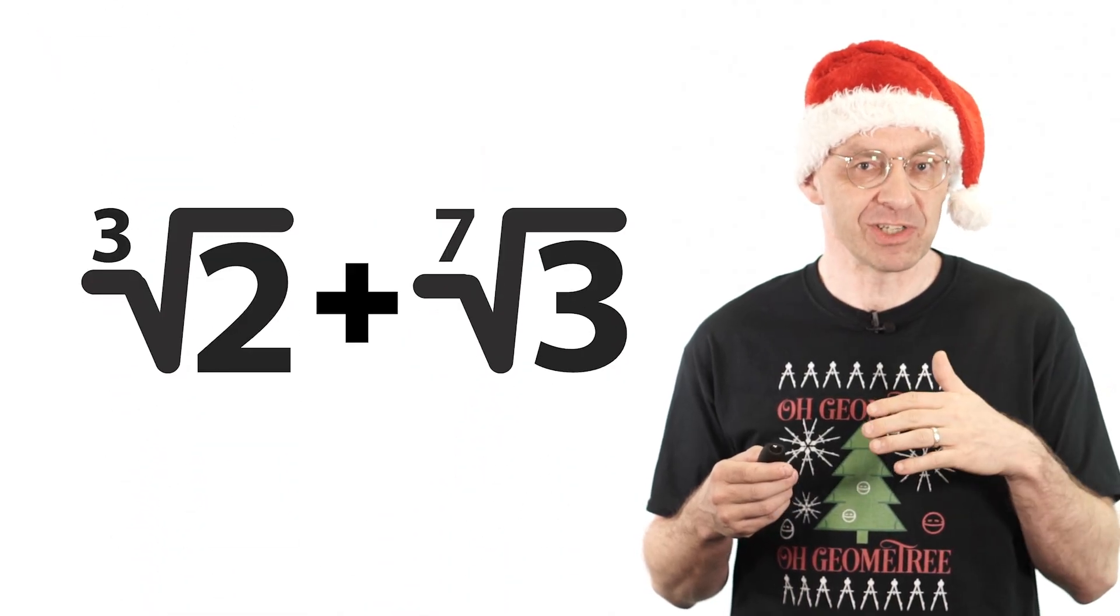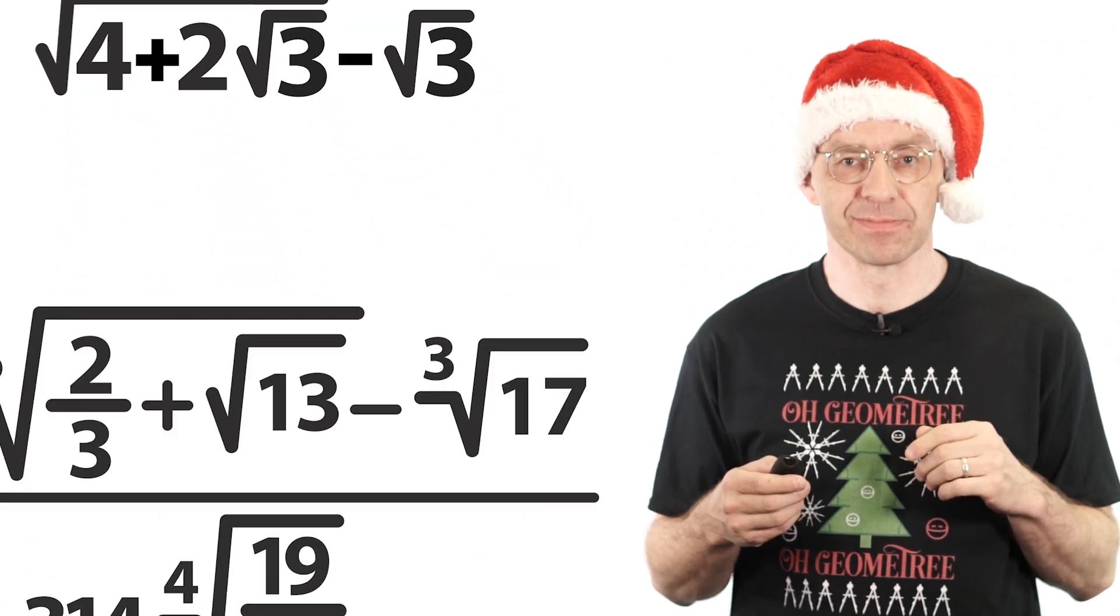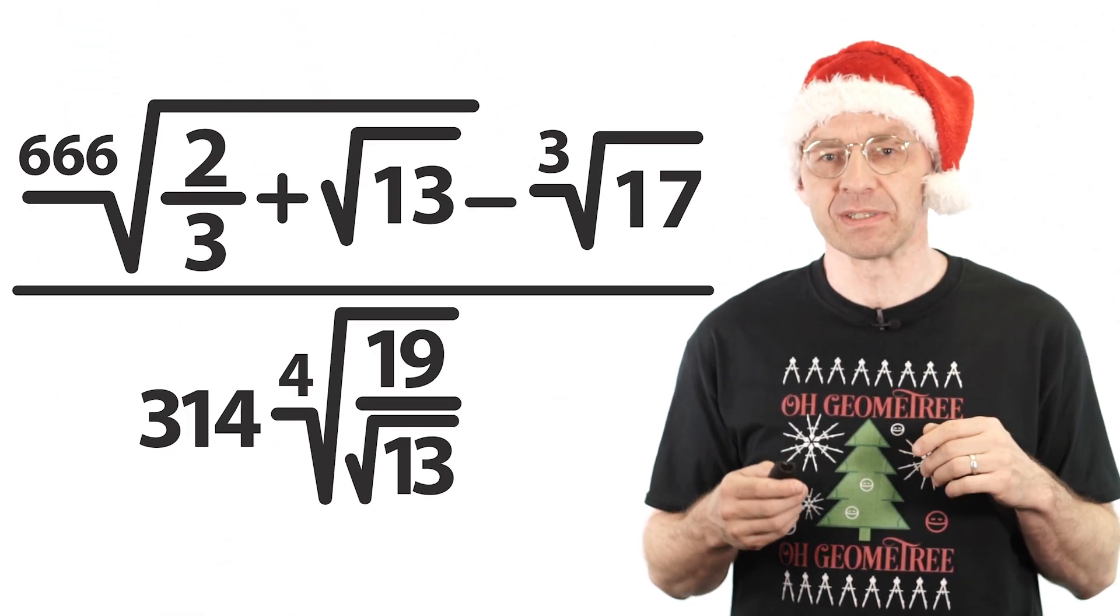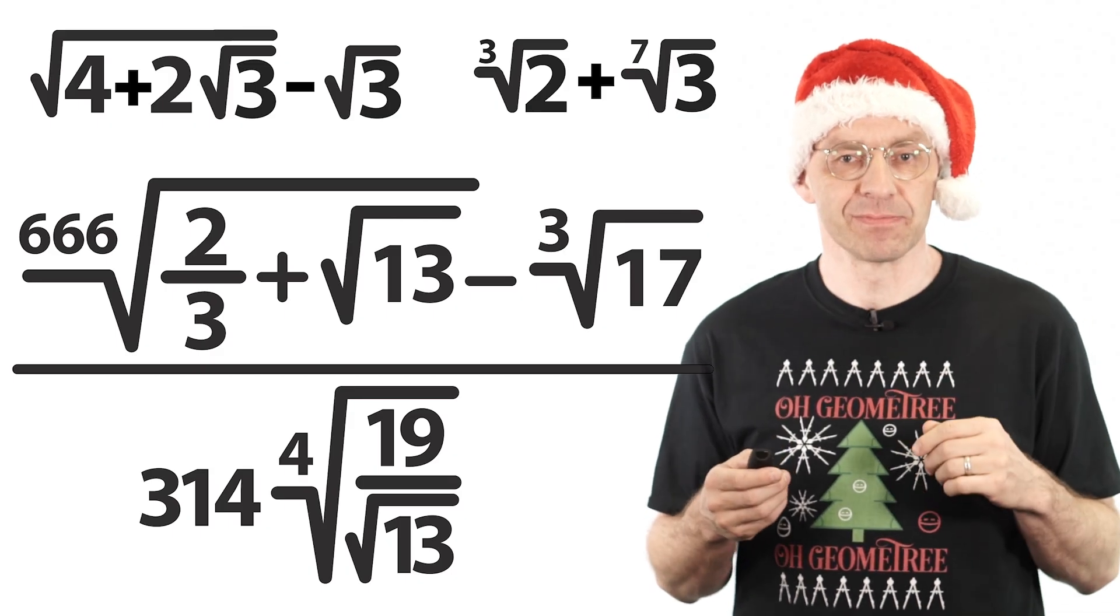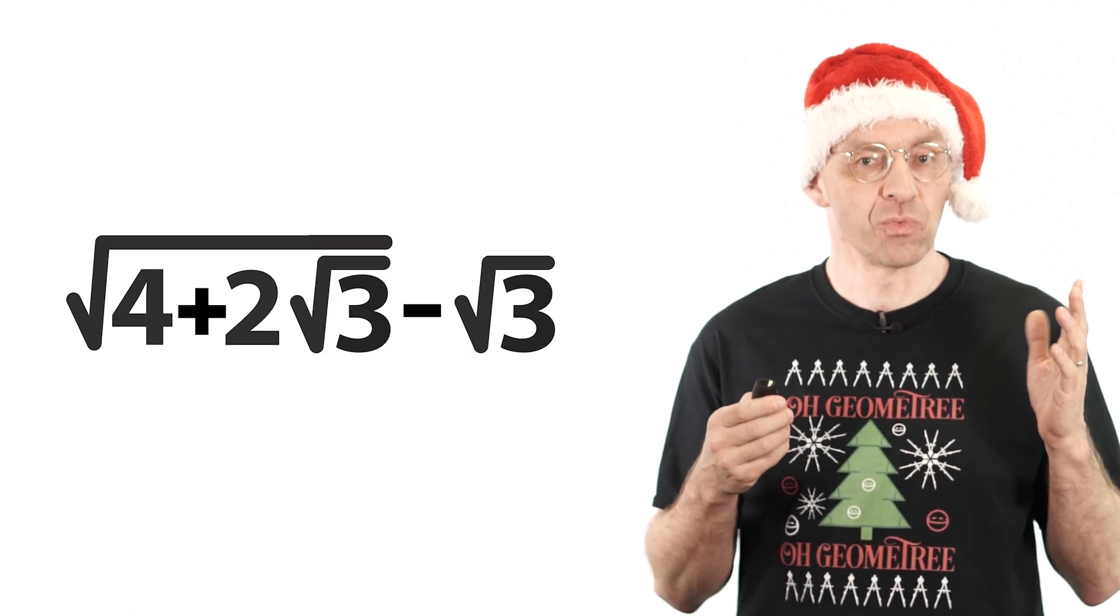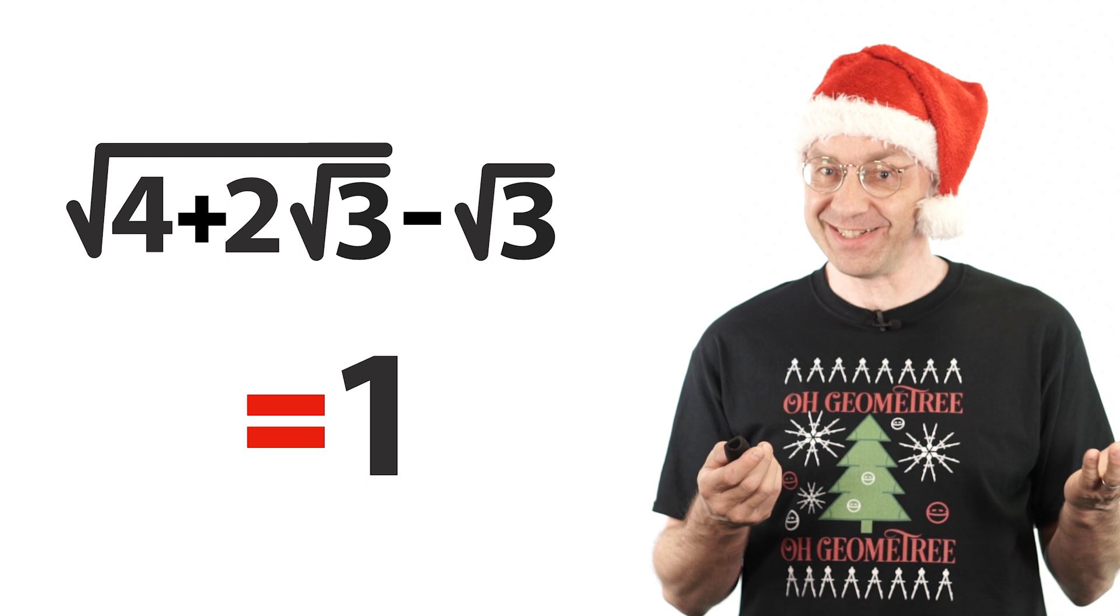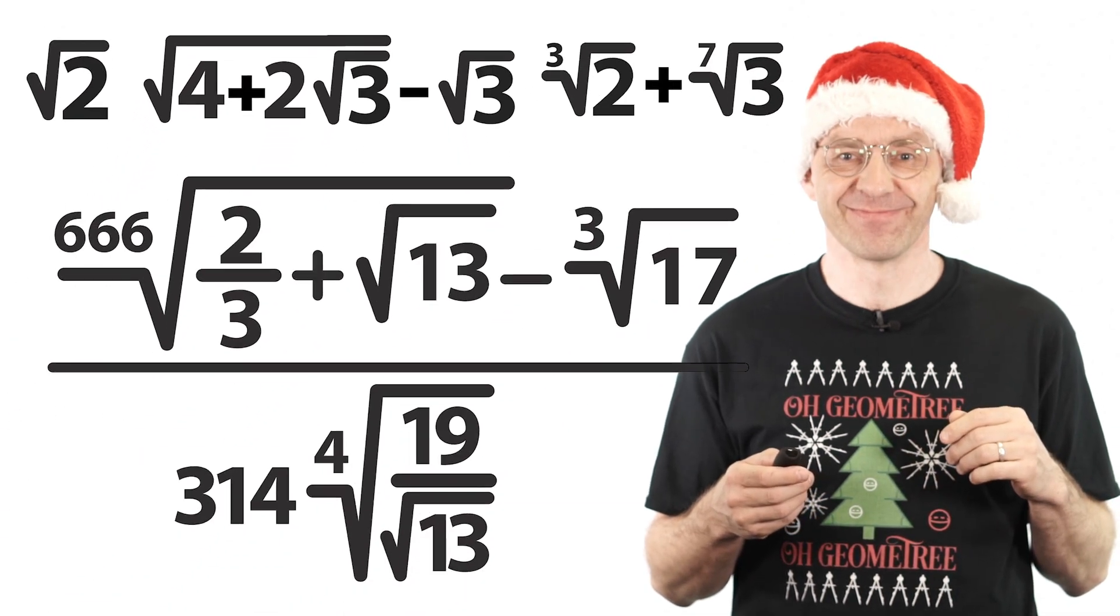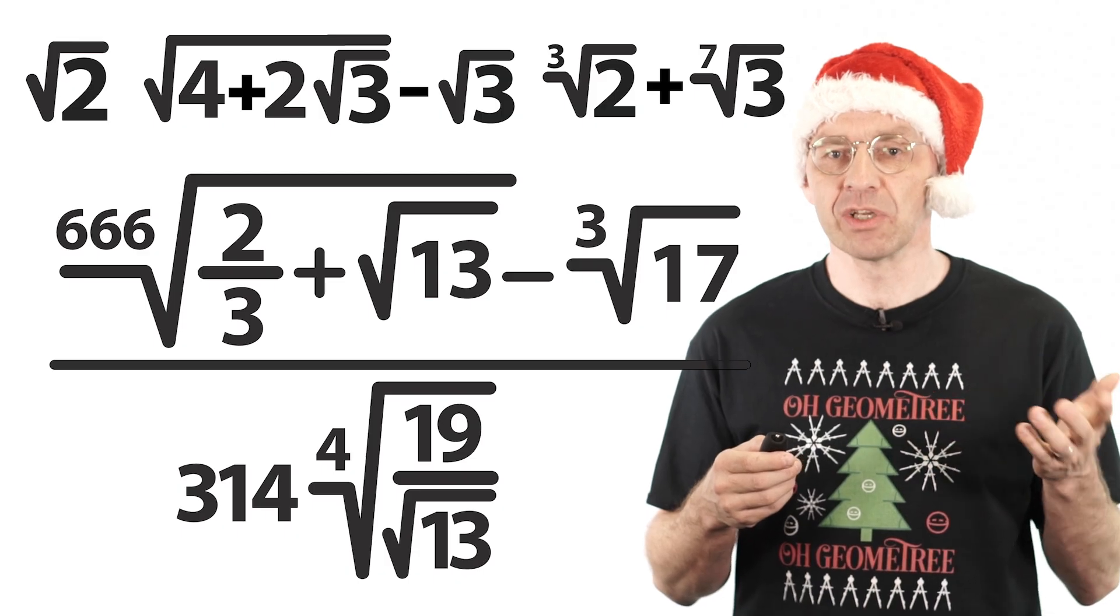But now try this rooty number on your local preschooler. Rational or irrational? And how about this one? Or this one? Well, all these numbers look pretty damn irrational, right? But one of them isn't. This number here actually turns out to be equal to 1, which is very much not irrational. Surprised?